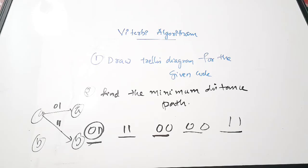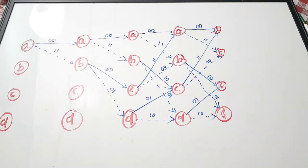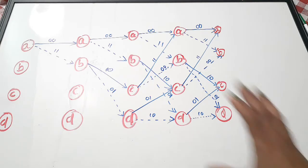So what we are going to do is: first draw the Trellis diagram, then find the minimum distance path from that Trellis diagram. The drawing of the Trellis diagram was explained in the previous video. In this video, I will take that Trellis diagram and perform the Viterbi decoding for a particular received code word, showing how to find the minimum distance path and decode the code word.